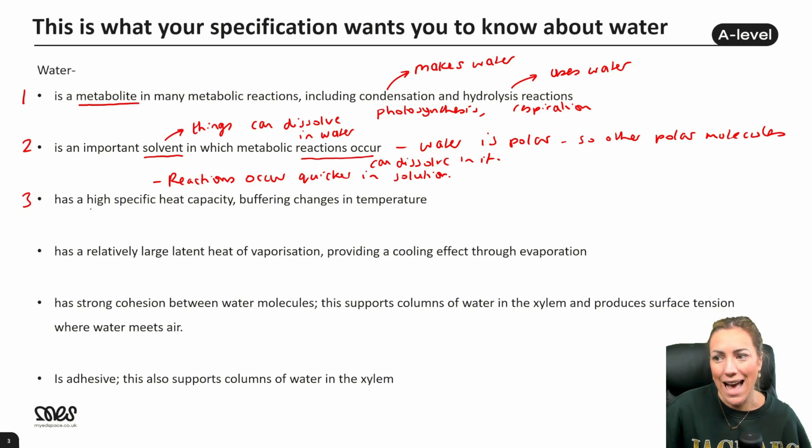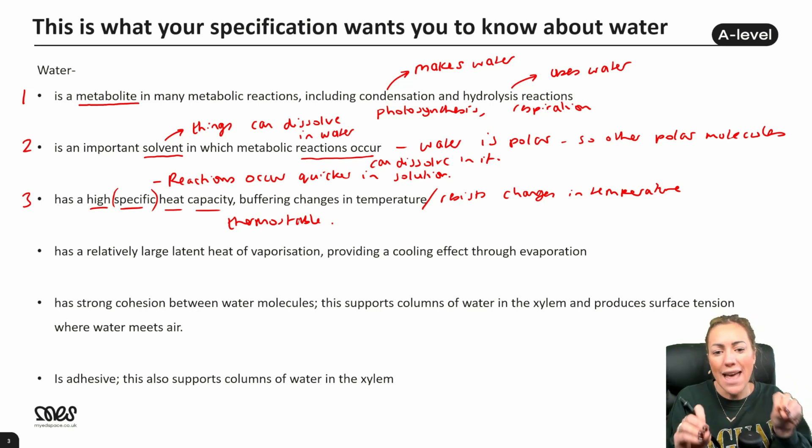Number three, water has a high specific heat capacity. I'm going to put the word specific in brackets because to get credit for this property, you can just say a high heat capacity. Now what this means is it buffers changes in temperature, or we can say it resists changes in temperature. And we can also describe water as being thermostable. Now basically what this means is you would have to add a lot of energy, a lot of thermal energy into water to make the temperature increase. Equally, you'd have to remove a lot of energy to make the temperature decrease. So if the environmental temperature is changing a lot, the temperature of water will not change that much. It is thermostable. It buffers changes in temperature or it resists changes in temperature. That's the advantage linked to this property of having a high specific heat capacity.